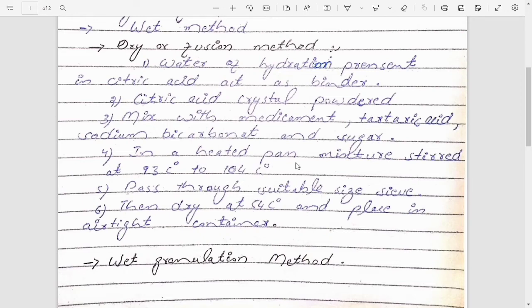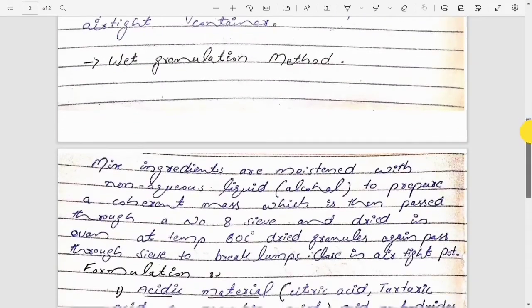After mixing, we will transfer this mixture into a heating pan. The range of temperature of the heating pan is from 93 degrees centigrade to 140 degrees centigrade. We will stir the mixture in the heating pan. After some time you will get a soft mass. That soft mass will be passed to a suitable size sieve, so we will get the desired size granules. Then we will dry these granules at 54 degrees centigrade and after drying we will store these granules in airtight container.